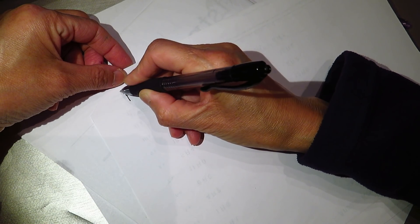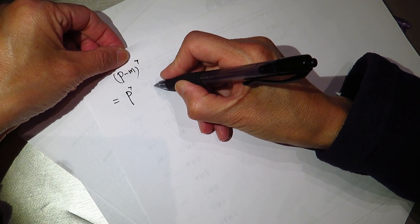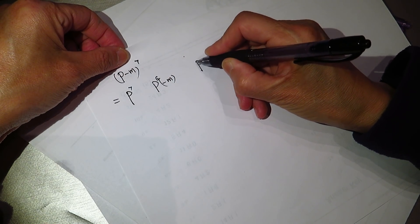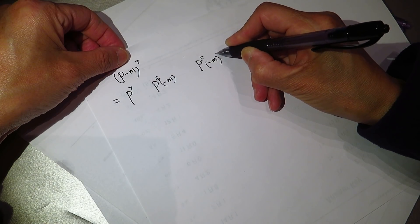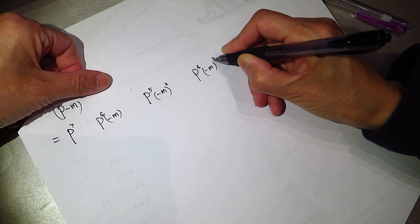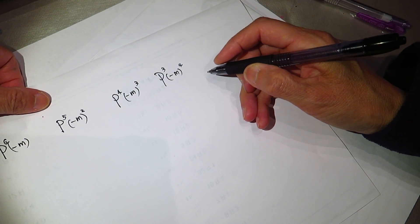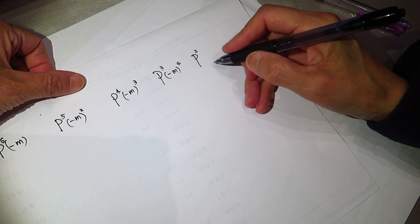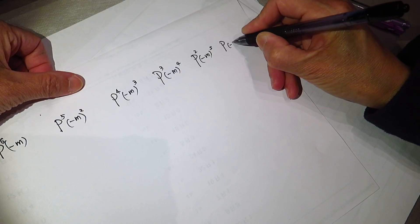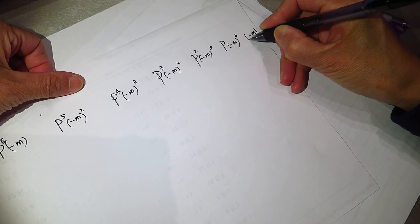P minus M to the power of 7 equal to P^7, P^6 (-M), P^5 (-M)^2, P^4 (-M)^3, P^3 (-M)^4, P^2 (-M)^5, P (-M)^6, (-M)^7.